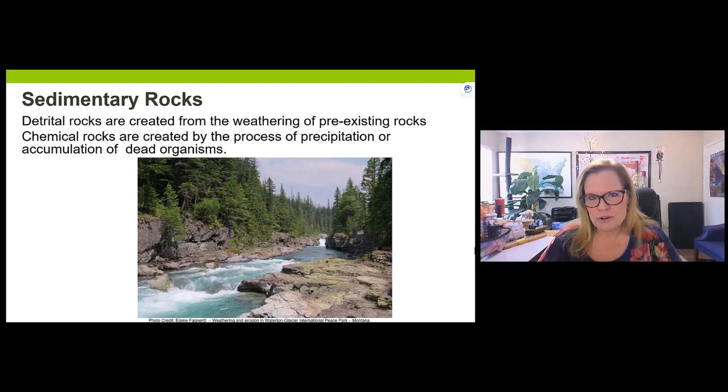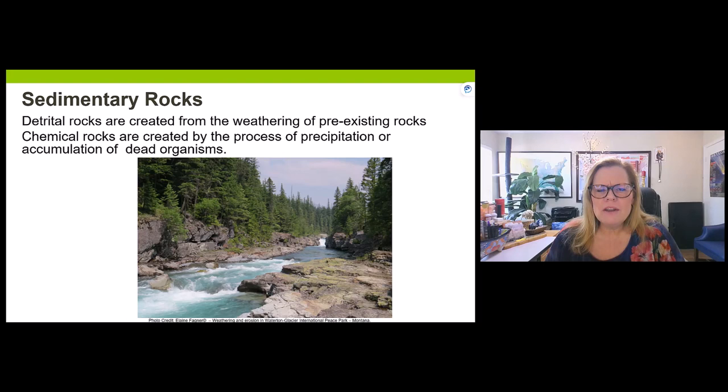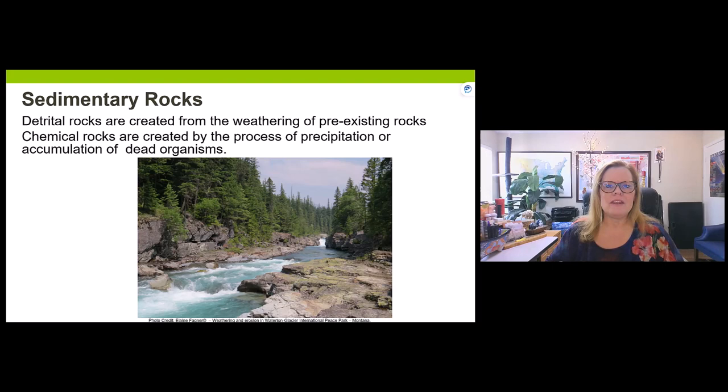Take this river in Glacier National Park along the Going-to-the-Sun Road — it is weathering down rocks. Pre-existing rock layers get broken into smaller grains over time, then deposited somewhere when water slows enough to settle those materials and form a new rock layer.